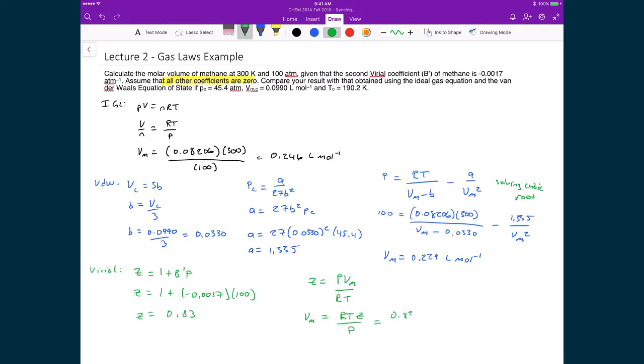I can then substitute in the numbers. I'm going to have 0.83, which is my compressibility, times my ideal gas constant, using the one with the appropriate units, 0.08206. And that's going to be times the temperature, which is 300, all divided by 100. And that's equal to 0.204 liters per mole.